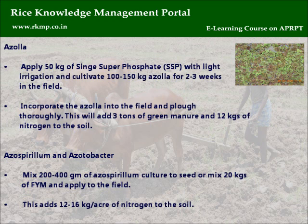Azospirillum and Azotobacter: Mix 200 to 400 grams of azospirillum culture to seed, or mix 20 kg of FYM and apply to the field. This adds 12 to 16 kg per acre of nitrogen to the soil.